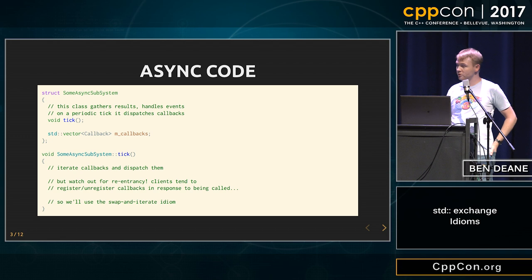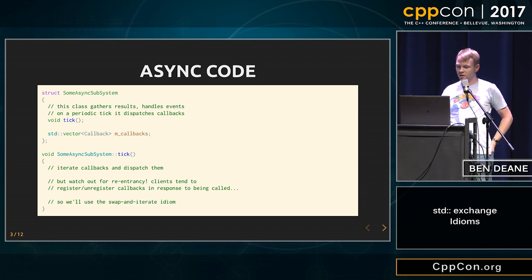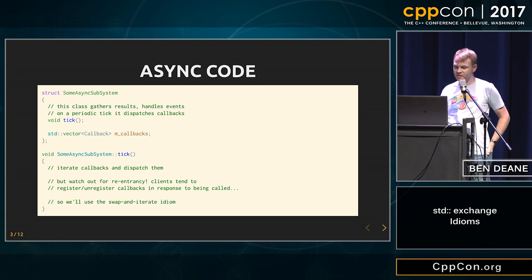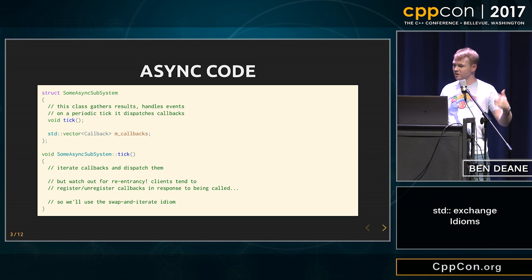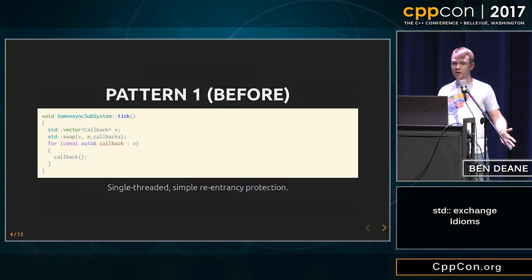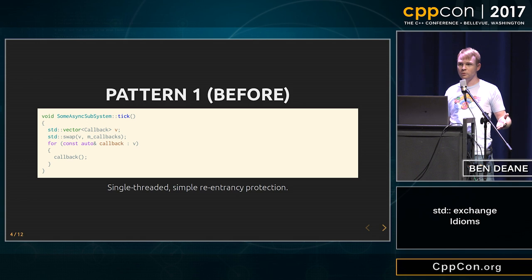How many of you have code that roughly looks something like this? You've got some asynchronous subsystem. It periodically ticks, and maybe you've registered some callbacks, and it wants to go through those callbacks and call them. But because there's some re-entrancy stuff and you don't want to impose things on your clients, you want to use a swap-and-iterate idiom. So your code might look something like this.